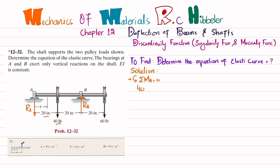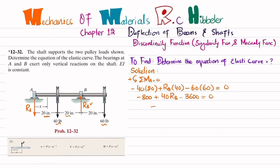Writing the equation: minus 40 times 20 (clockwise), plus RB times 40 (20 plus 20), minus 60 times 60, all equal to zero. This gives minus 800 plus 40·RB minus 3600 equals zero. So 40·RB equals 4400, therefore RB equals 110 pounds.